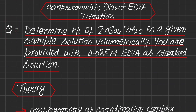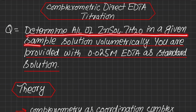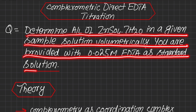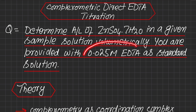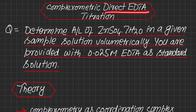The basic question of this titration is to determine the amount per liter of zinc sulfate·7H2O in a given sample solution volumetrically. You are provided with 0.025 molar EDTA as standard solution. The analyte is zinc sulfate·7H2O, and the standard solution is 0.025 molar EDTA. This is a direct EDTA titration, as there are other types like indirect and back titration.